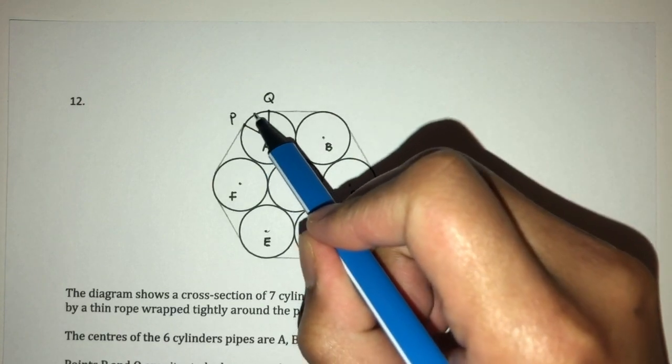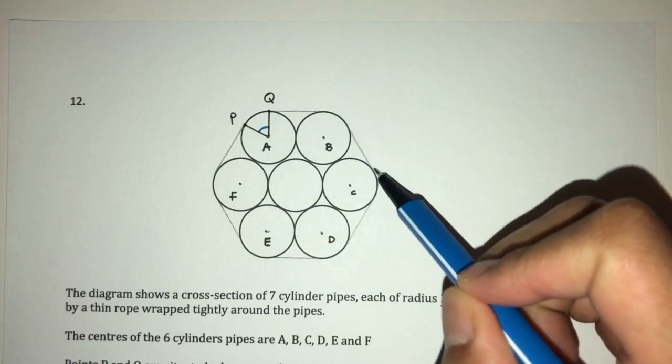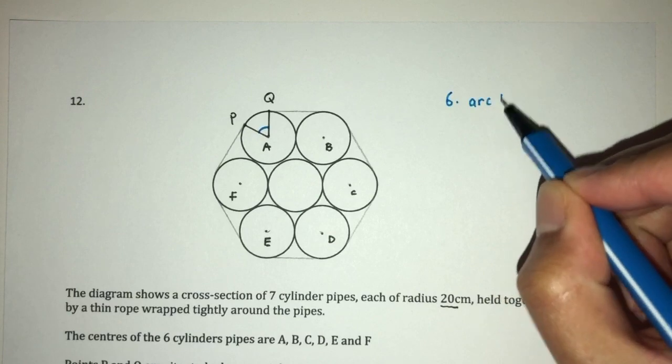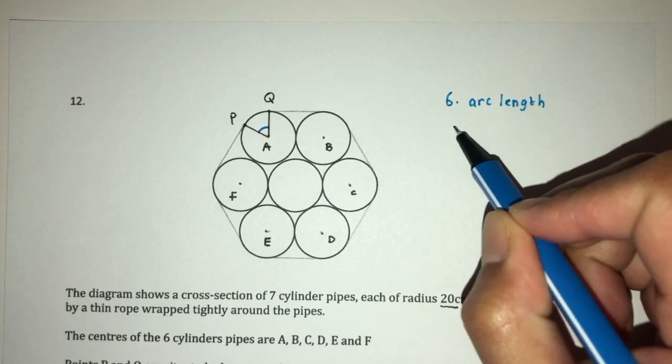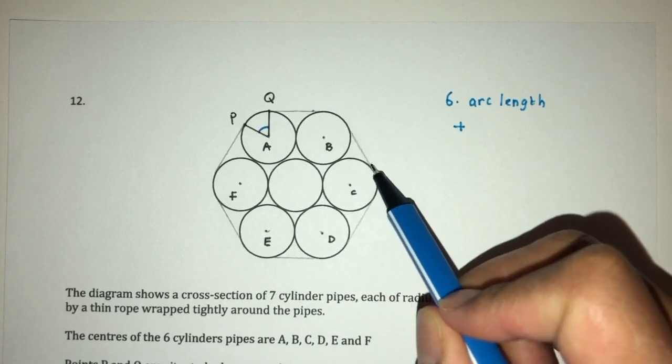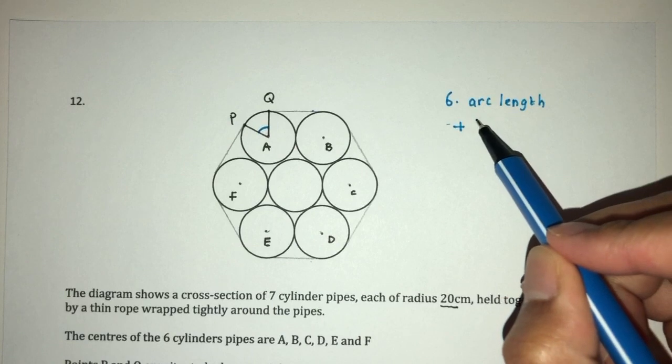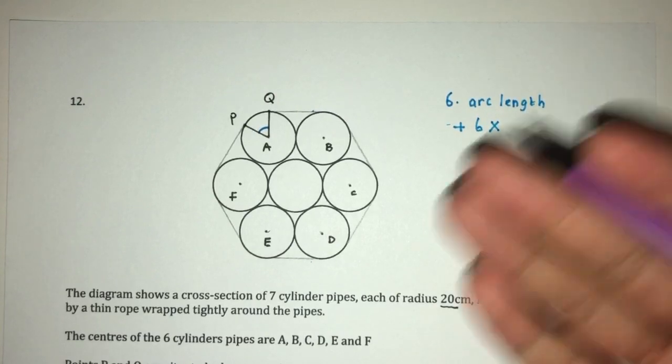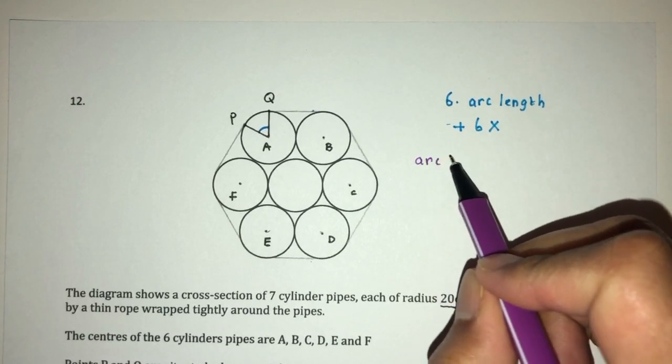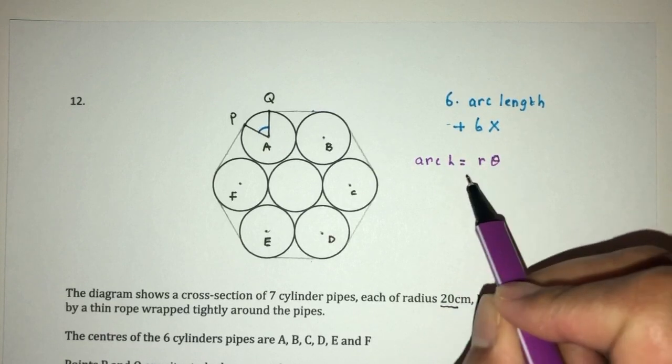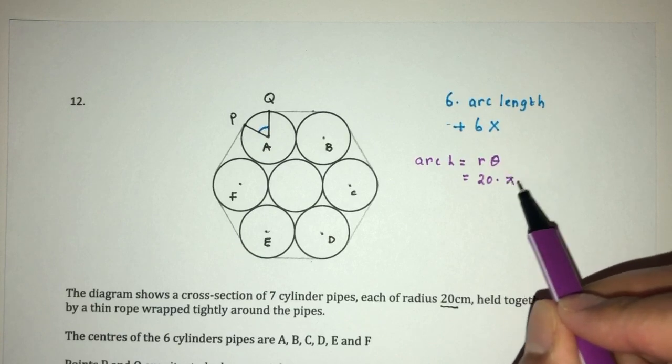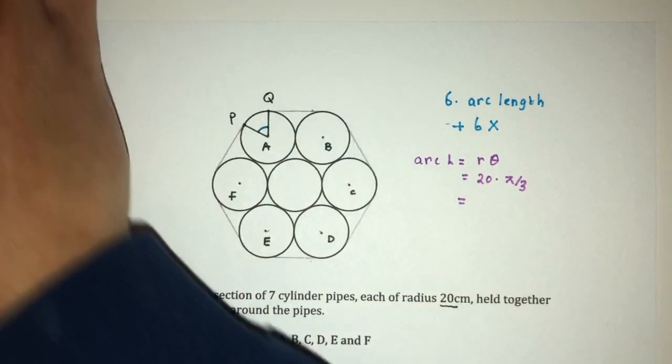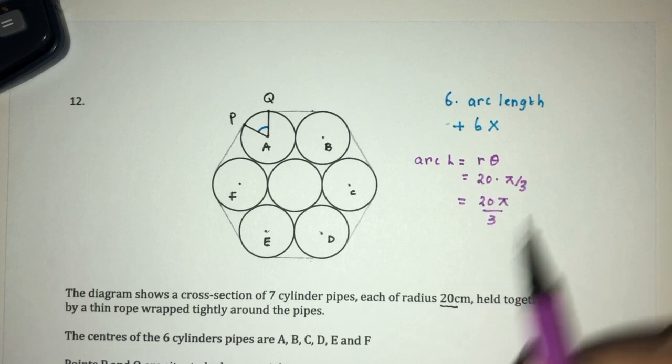For example, here we have one, two, three, four, five, six. So, we have six arc lengths. Then, plus, we have one, two, three, four, five, six straight sections. Let's call this length X. Now, how do you find arc length in circular measure? We know that arc length is equal to R times the angle. So, R is radius, that will be 20. Angle is π by 3. We can multiply.